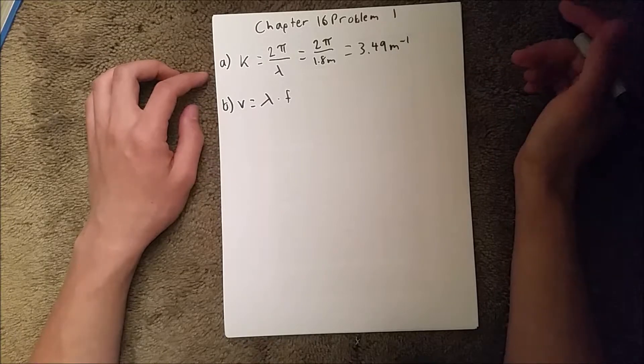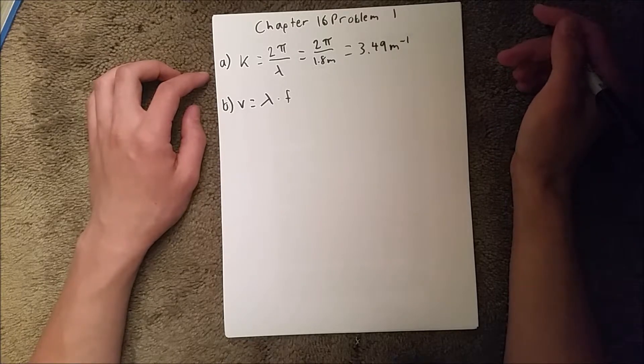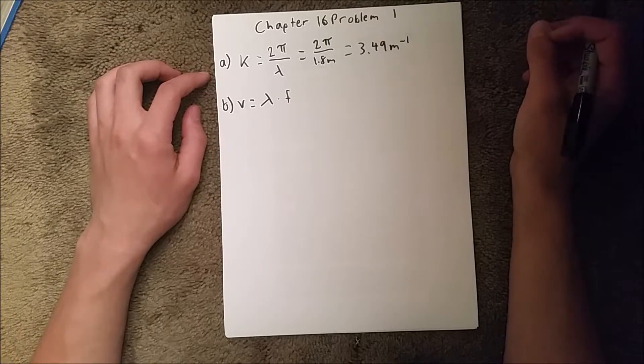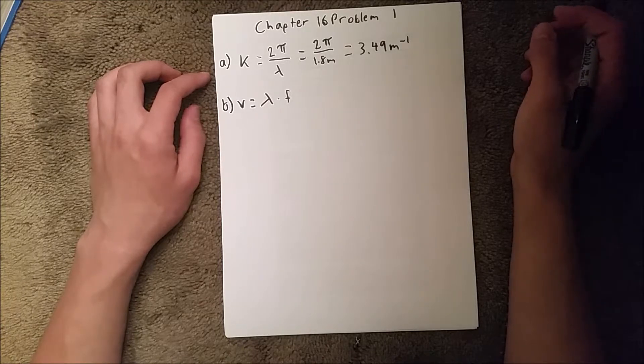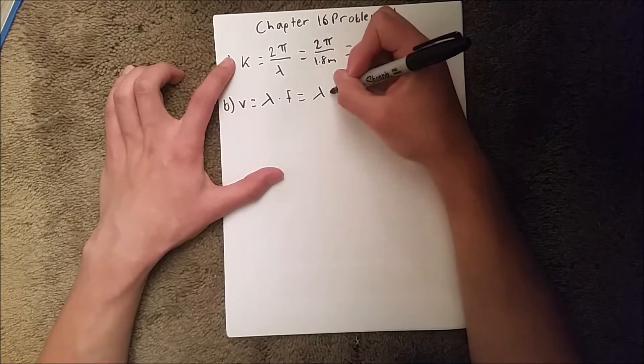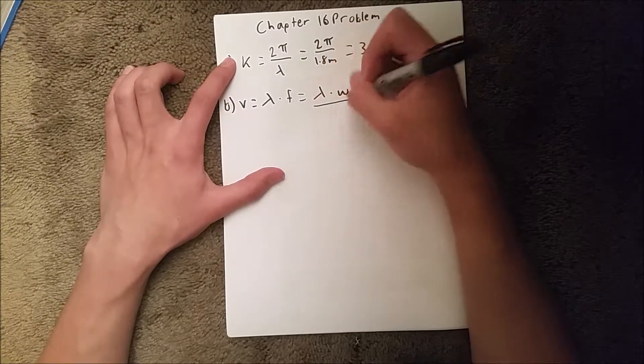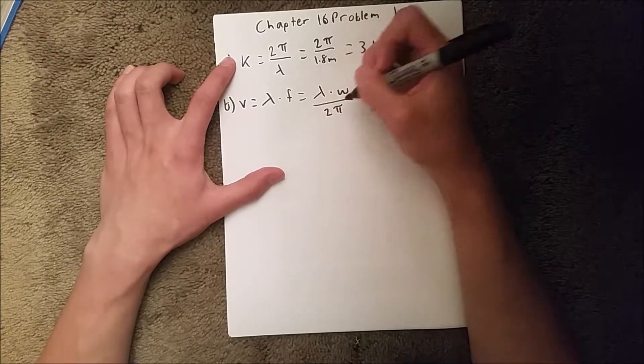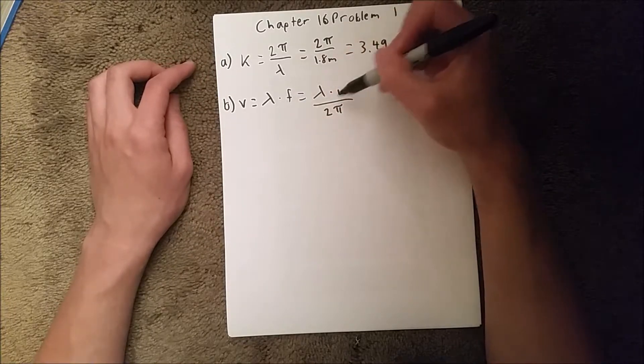And unfortunately, we aren't given the frequency, so we need to expand that a little further because we are given the angular frequency. So we can expand that to wavelength times omega over 2π, because frequency is equal to omega over 2π.